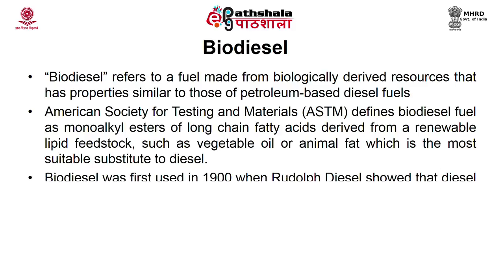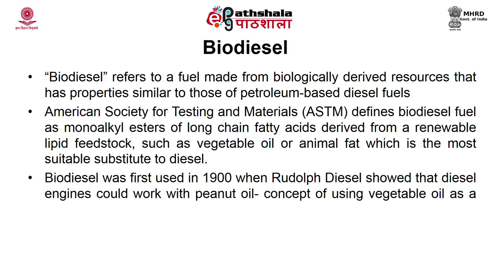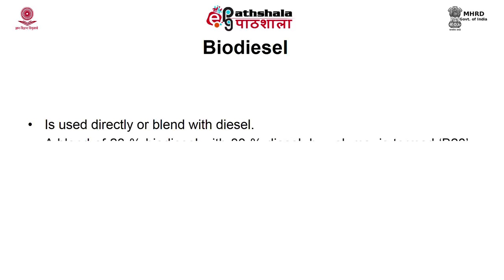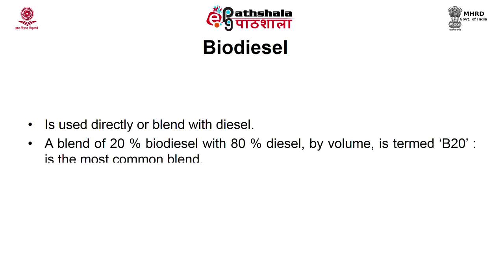Biodiesel was first used in 1900 when Rudolf Diesel demonstrated that diesel engines can work with peanut oil. Biodiesel can be used directly in the engine or blended with diesel. Normally, up to 20% blending there is no need to change the engine type, but afterwards a modification is required. A blend of 20% biodiesel with 80% diesel by volume is termed as B20.